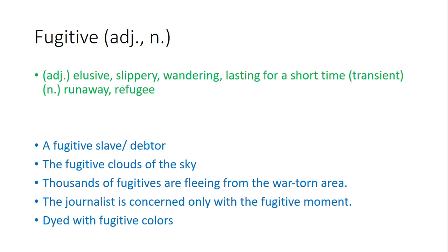Fugitive — when used as an adjective, it means elusive, slippery, wandering, lasting for a short time, transient. When used as a noun, it means a runaway, refugee. Examples: Number one, a fugitive slave; a fugitive deputy. Number two, the fugitive clouds of the sky. Number three, thousands of fugitives are fleeing from the war-torn area. Number four, the journalist is concerned only with the fugitive moment. Number five, dyed with fugitive colors.